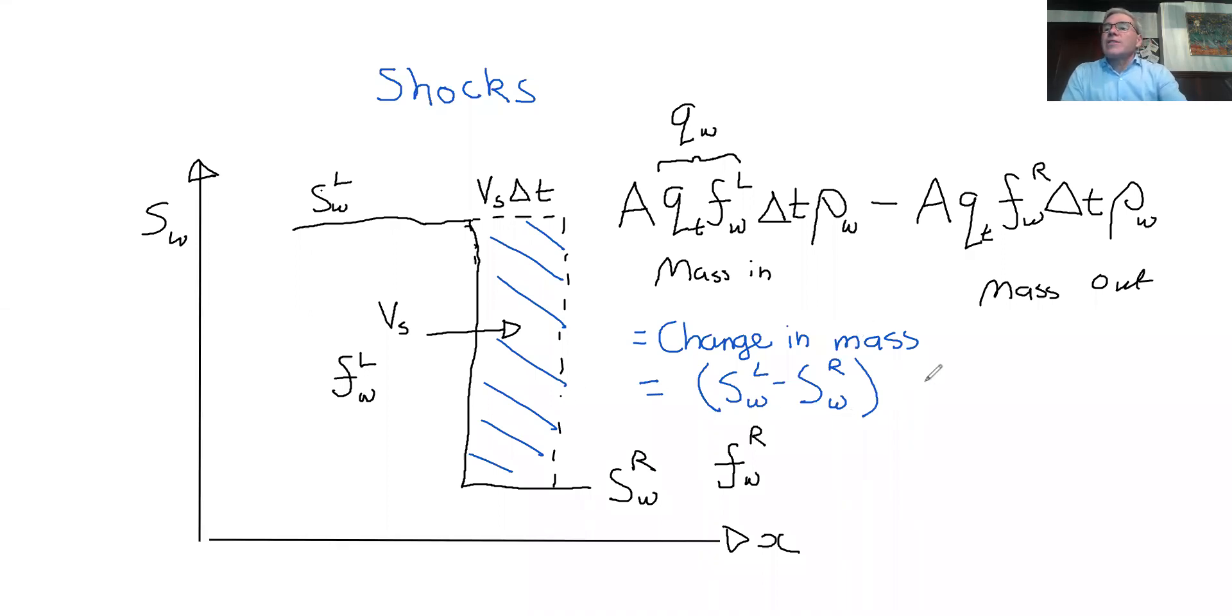Then that's a saturation. We multiply it by φ. And now we need to multiply it by the whole volume, which is area times Δx. Now Δx is V_shock times Δt. And then we have a ρ_W.